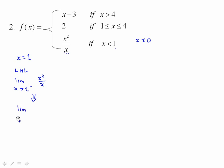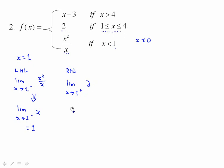Simplifying x²/x gives x, so the limit as x approaches 1 from the left of x equals 1. For the right-hand limit approaching 1 from the right, the function in play is y = 2 — that's the function between 1 and 4 — so the limit is simply 2. Clearly, the left-hand limit does not equal the right-hand limit, so the limit of the function as x approaches 1 does not exist.